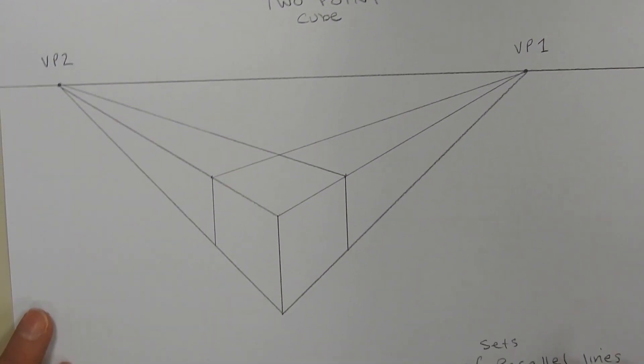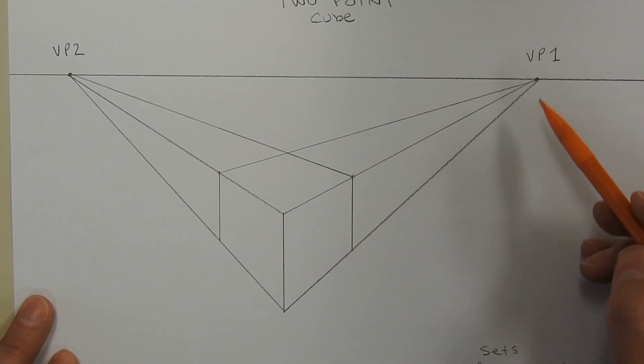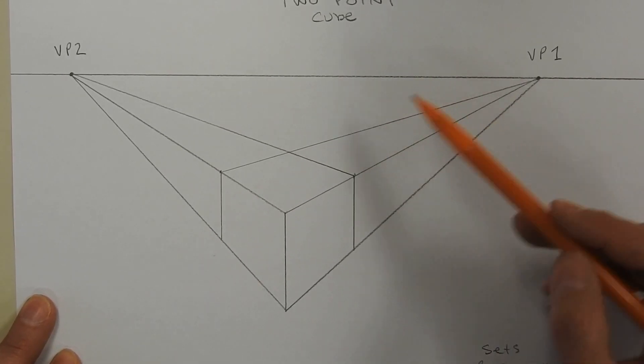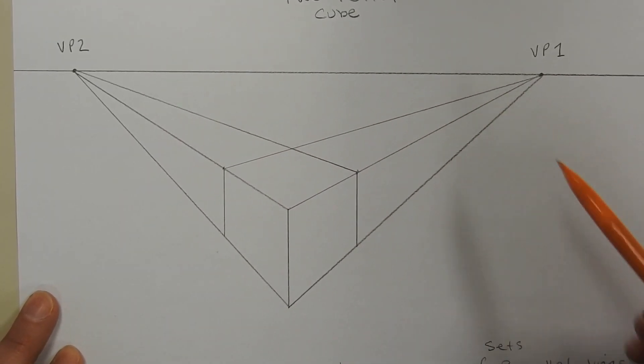Now if we look at two point, we're still going to start with a horizon line. But for two point we're going to have two vanishing points.